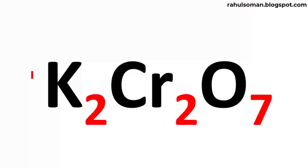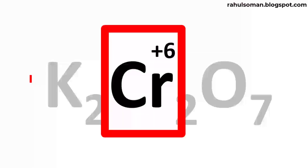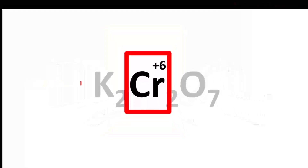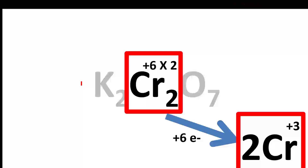The next question is: what is the oxidation state of chromium here? The central metal atom is in the +6 oxidation state, and there are 2 chromium ions present, giving a total oxidation state of +12, so +6 per individual metal. This +6 oxidation state chromium undergoes a redox reaction and changes to its +3 oxidation state — a 6-electron redox process. Whenever 6 electrons are accepted by potassium dichromate, chromium converts to Cr³⁺.